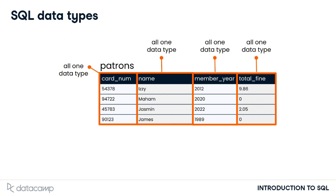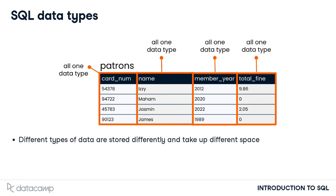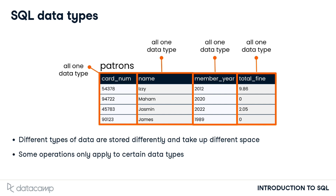We use data types for several reasons. First, different types of data are stored differently and take up different amounts of storage space. Second, some operations only apply to certain data types. It makes sense to multiply a number by another number, but it does not make sense to multiply text by other text, for example.